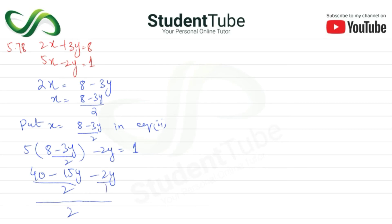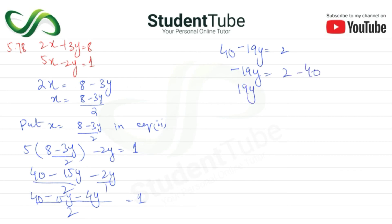After taking LCM 2, we get 40 minus 15y minus 4y is equal to 2. So 40 minus 19y equals 2, which gives 19y equals 2 minus 40, so 19y equals minus 38. Dividing both sides by 19, y is equal to 2.